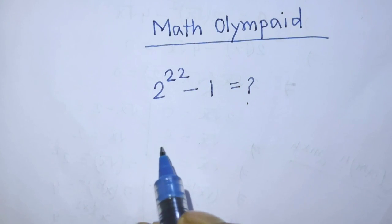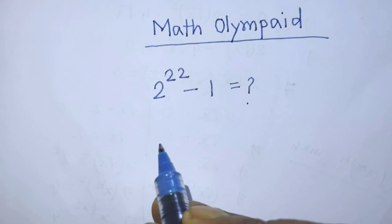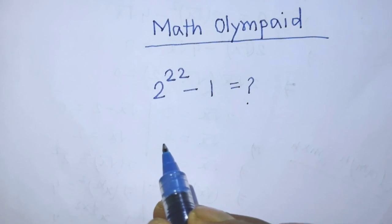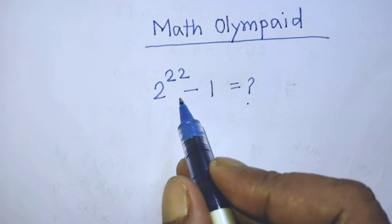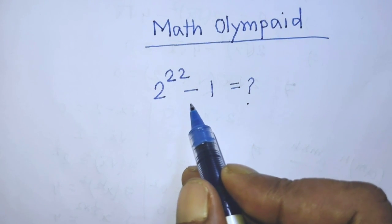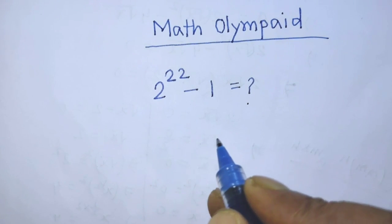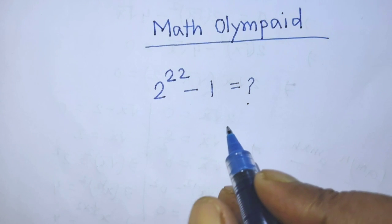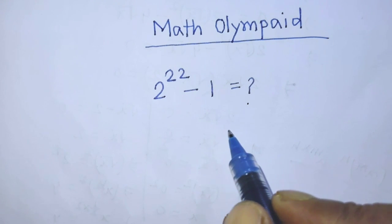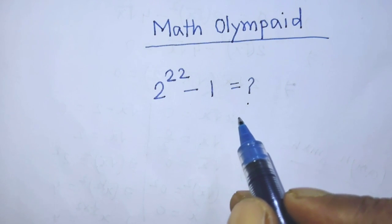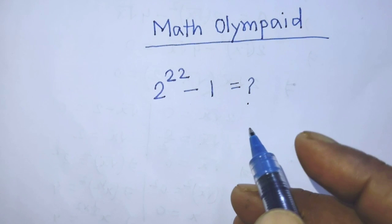Hello guys, you are welcome. Today I am telling you how to simplify this algebraic expression, which is 2 to the power 22 minus 1.